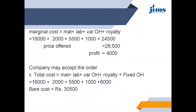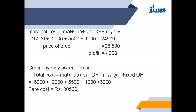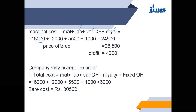The company has to calculate the marginal cost. From the given information, we consider material, labour, variable overheads, and royalty — but not fixed overheads, as only variable costs are included in marginal cost. So: material Rs. 16,000, labour Rs. 2,000, variable overheads Rs. 5,500, royalty Rs. 1,000. The marginal cost for this product is Rs. 24,500, while the selling price is Rs. 36,500.